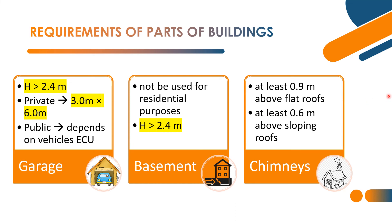Next: chimneys. At least 0.9 meters height above flat roofs. In case of sloping roofs, the height of the chimney depends on pollution considerations and the type of roof — flat roof or sloping roof.